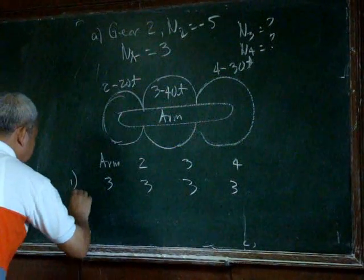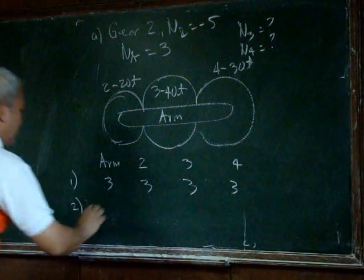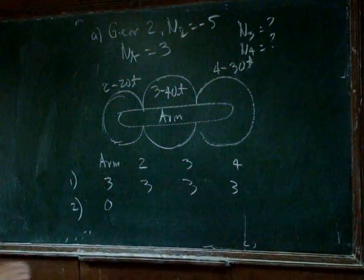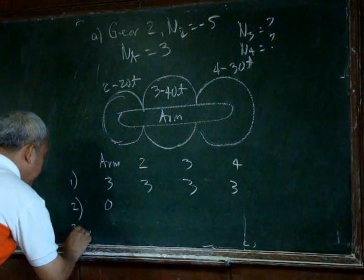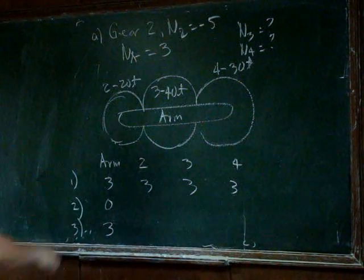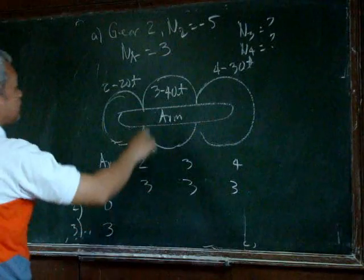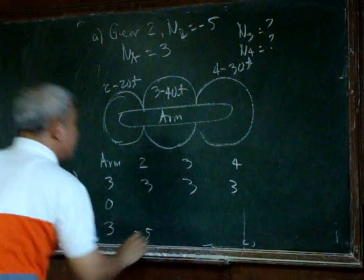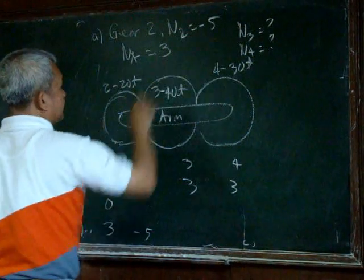And if that is the rotation of the whole mechanism, we can now proceed with the next step, where we have to lock or we have to fix the arm, so that its final rotation will be 3. And then there is another thing that we have to put here.